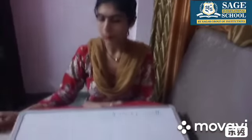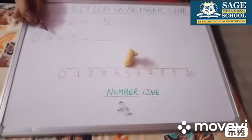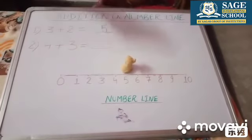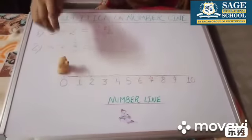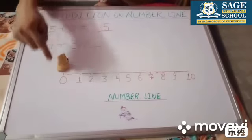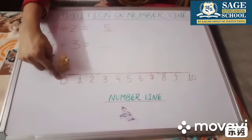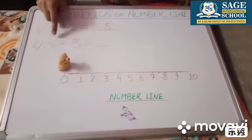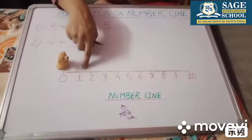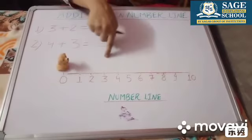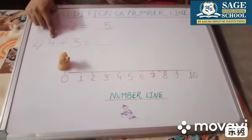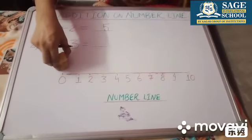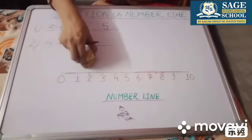Let us see one more example. The second example is four plus three. Again the dog will start at zero — the number line always starts from zero. We will move in the forward direction. We have to move four steps: zero to one, one to two, two to three, and three to four.